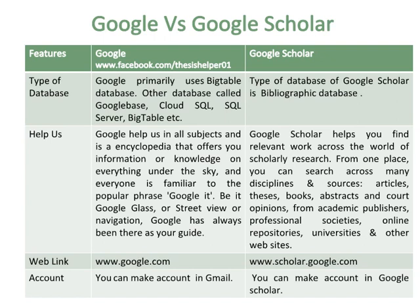Google helps in all subjects and is like an encyclopedia that offers information on everything. Everyone is familiar with the popular phrase 'Google it.' Google has always been there as a guide — be it Google Glass, Street View, or navigation. Google Scholar helps you find relevant scholarly research from one place, searching across many disciplines and sources: articles, theses, books, abstracts, and court opinions from academic publishers, professional societies, online repositories, and universities.